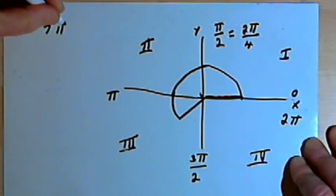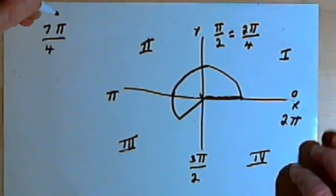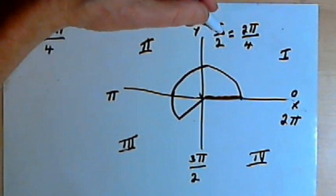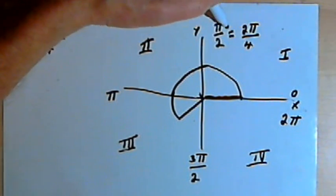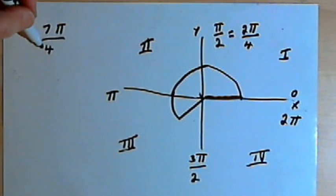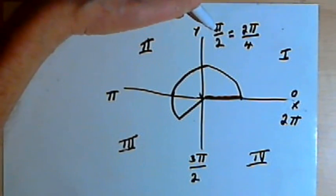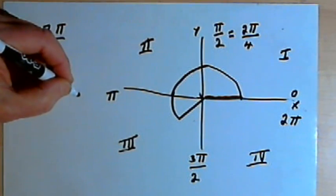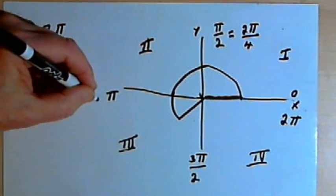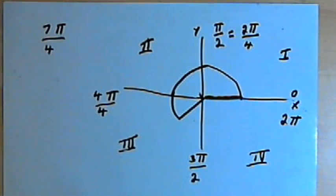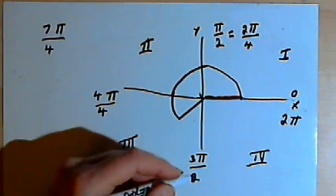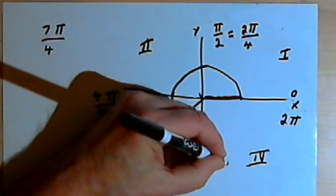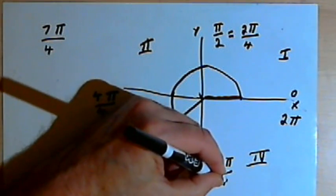What if we have 7π over 4? Well once again, let's change the versions of π that we have so the denominators are 4. So I'm going to have 2π over 4 instead of π over 2. π, halfway around the circle, would be the same as 4π over 4. 3π over 2 would be the same as 6π over 4.